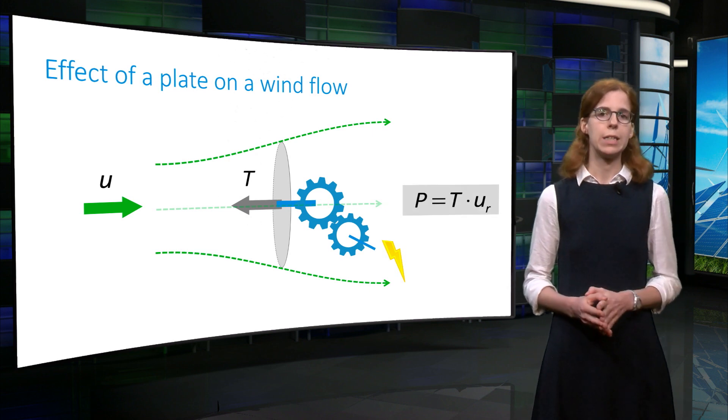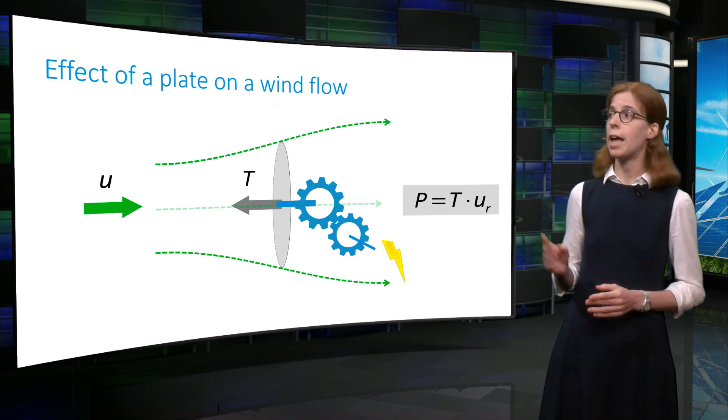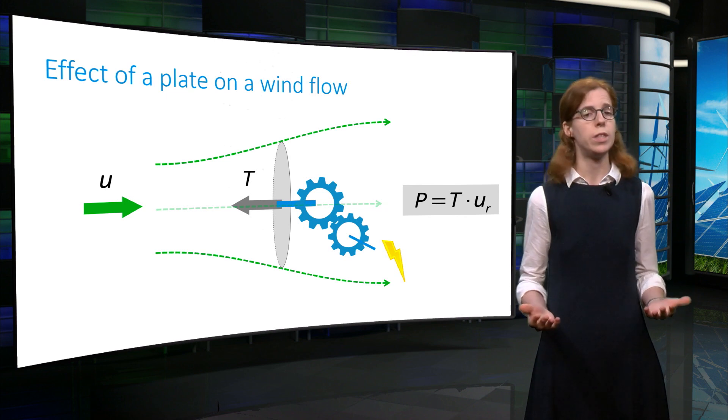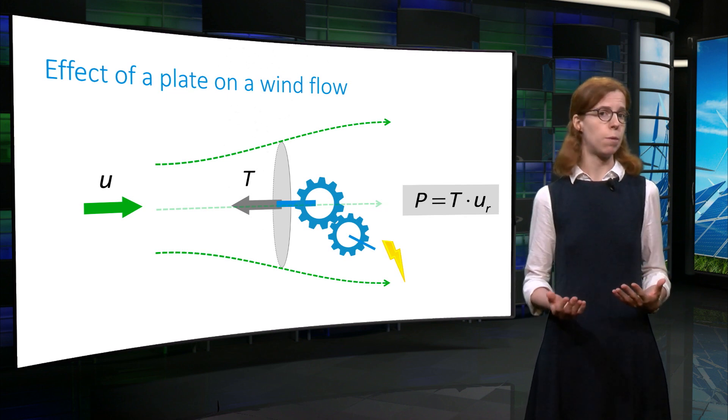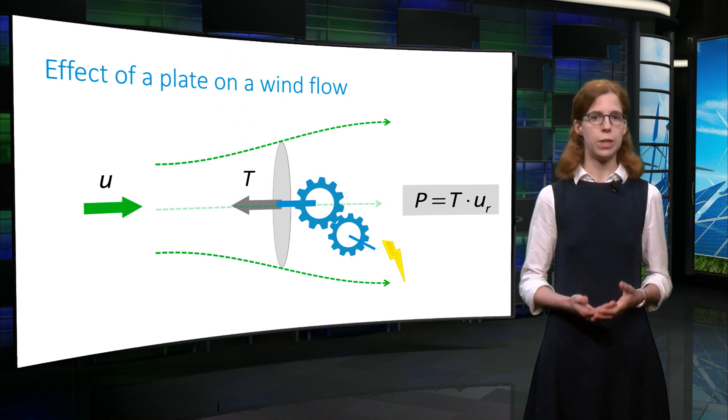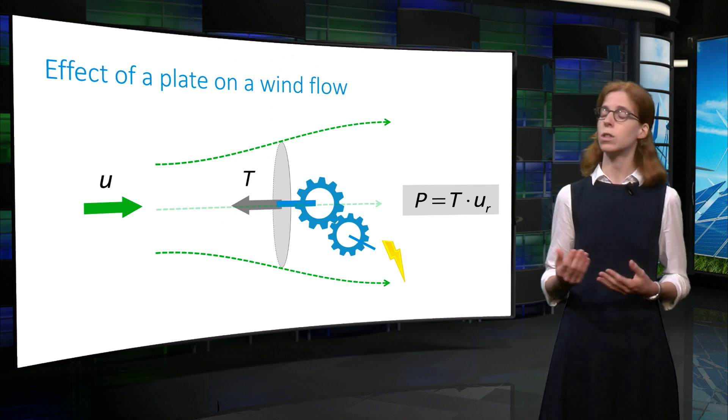The power extracted from the wind at the disk equals the product of the force T and the velocity at the disk. This is why both quantities should be non-zero in order to extract power. Considering that the disk represents the wind turbine rotor, the velocity at the disk is denoted by U.